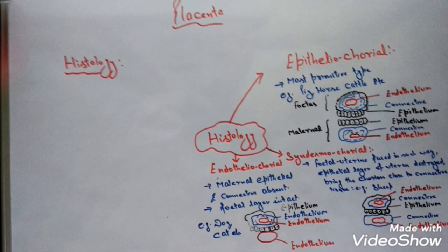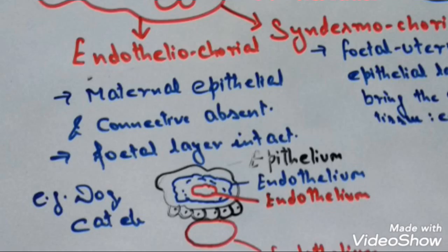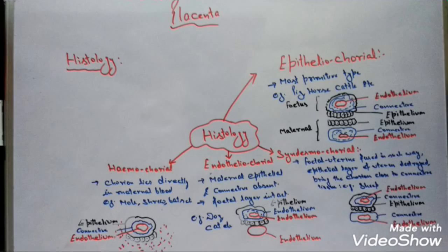Another type based on histology is endotheliochorial type of placenta. Here the maternal uterine tissue loses its second component also — that is the connective tissue. So the chorion of the fetus lies directly in contact with the endothelial tissue of the mother's uterus. All three layers of the fetus — epithelial, connective tissue, and endothelial — remain intact. However, the maternal tissue has only the endothelial layer remaining. The next type is hemochorial type of placenta, where all three tissues of the maternal uterine — epithelial, connective, and endothelial — have been lost.